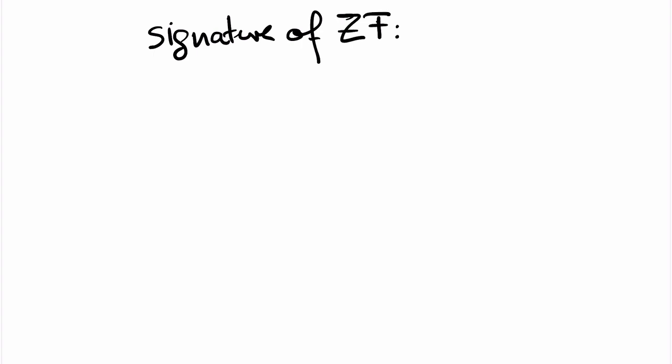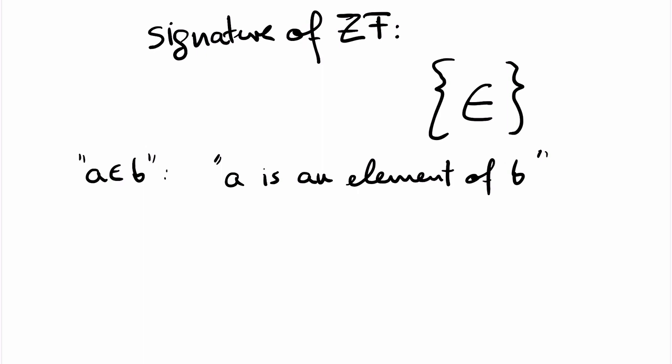First, we have to fix a signature. The signature of set theory is remarkably simple. We just need a single binary relation symbol used in infix notation, namely for the relation that we intend to use for 'a is an element of b'. So with our first-order formulas and sentences we will be talking about structures whose elements we imagine as sets.